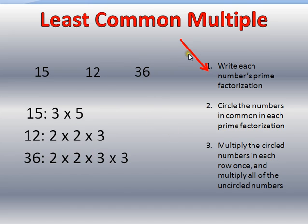Now, the second step is circle the numbers in common in each prime factorization. That means in common between the rows. So the first one, I look at 3, there's a 3 in the 15, a 3 in the 12, and a 3 in the 36.